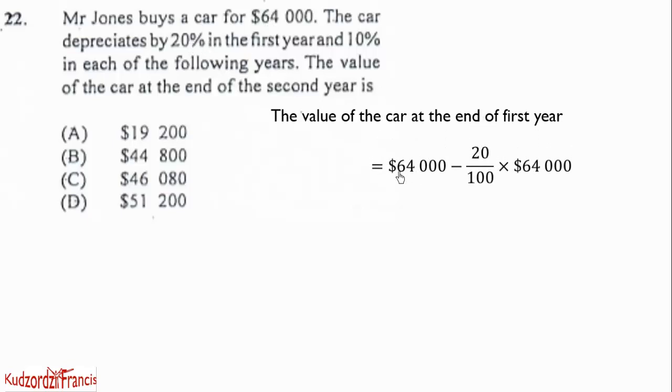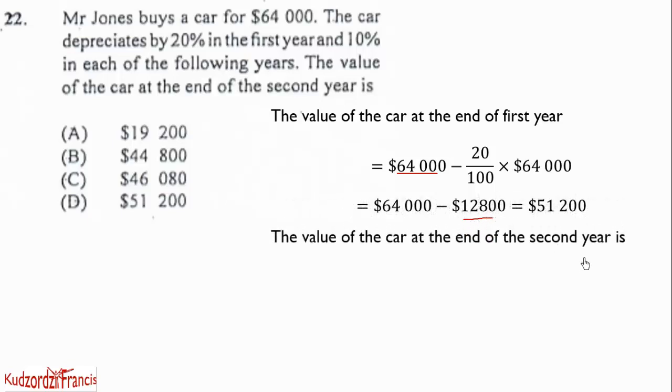We know that for the first year, at the end of the first year, we need to subtract the depreciated value from the original value. So the original value is $64,000 and the depreciation will be 20% of $64,000. And when we do that, we get $12,800. We take it from the original value to get $51,200. So the value at the end of the first year is $51,200.